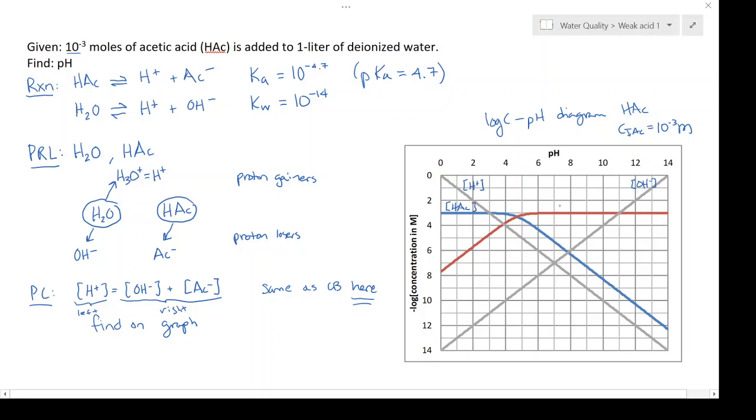To find the proton condition on the graph, on the left-hand side I'm going to follow the hydrogen line directly. On the right-hand side I'm going to follow the dominant species as I go to the left.